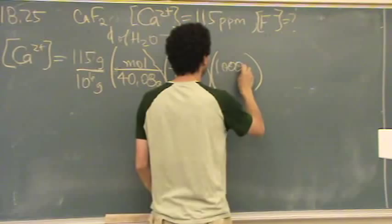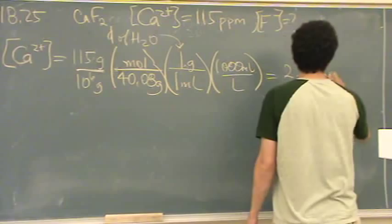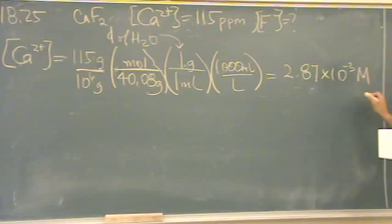Okay, that's not good enough. That's in milliliters. So we need a thousand milliliters per liter. This is going to turn out to be 2.87 times 10 to the minus 3. And this, again, is calcium concentration.